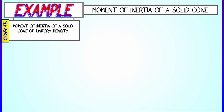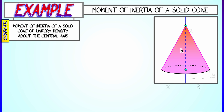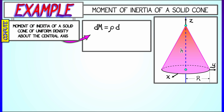Let's say that we have a solid cone, and let's keep the density uniform this time. We're going to rotate that cone about the central axis — the axis that goes through the apex and the center of the circular disk at the bottom. Let's say that that axis is the z-axis, and our cone is of height h, and the base circle is radius capital R.